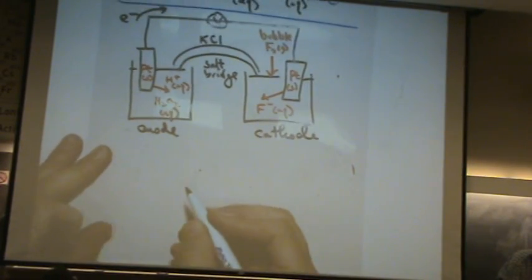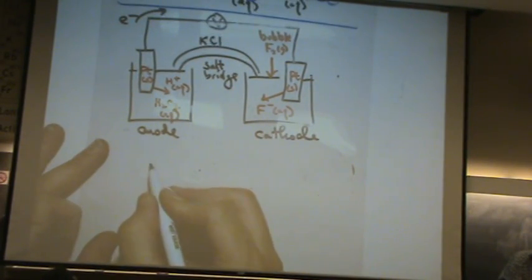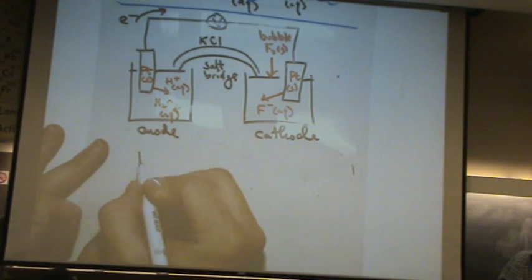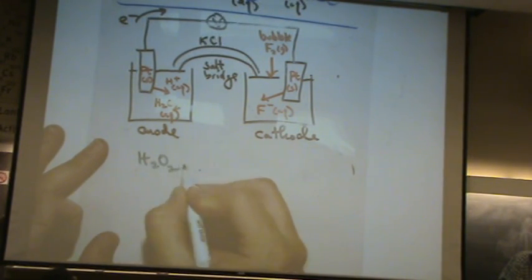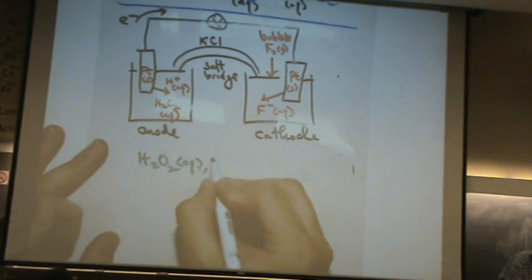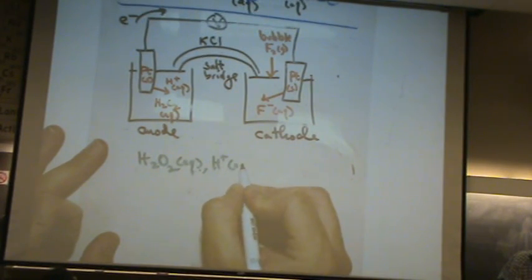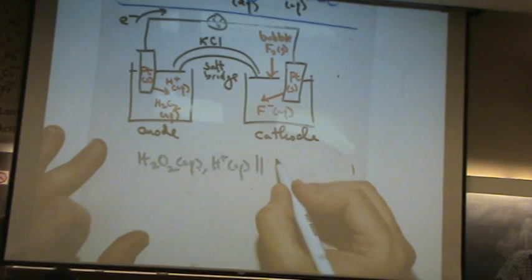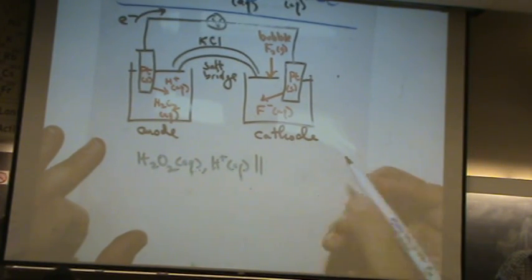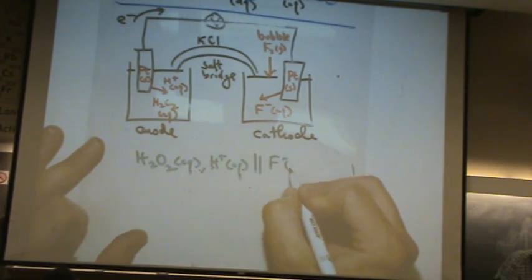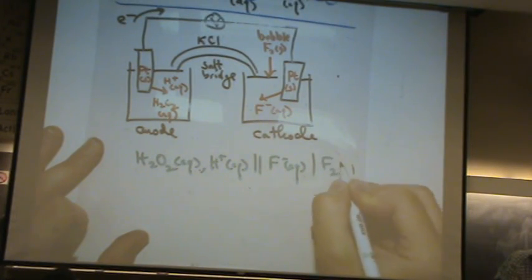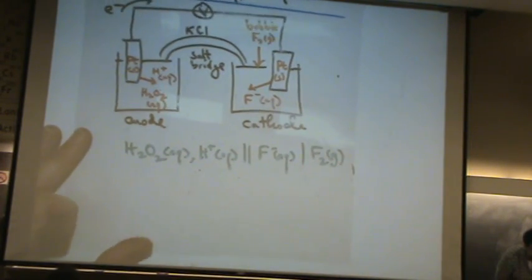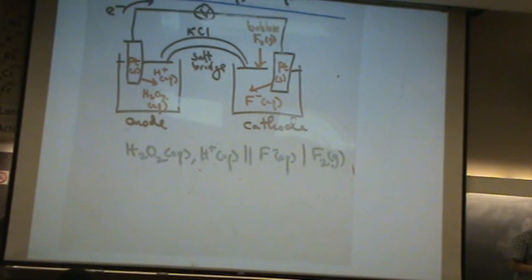The shorthand would be, the anode first, that's H2O2. And on the other side, we have F minus aqueous F2 gas. Okay? Any questions? Yeah.